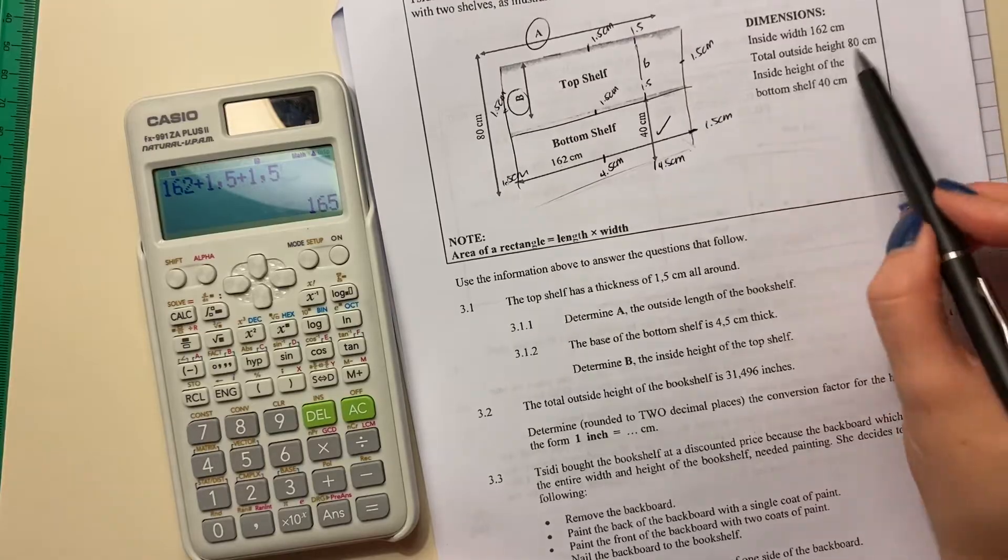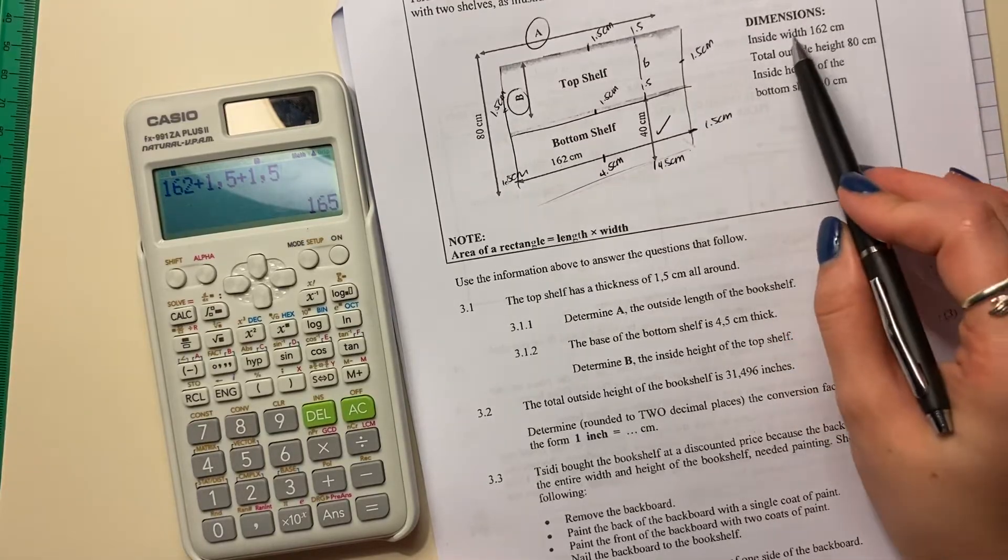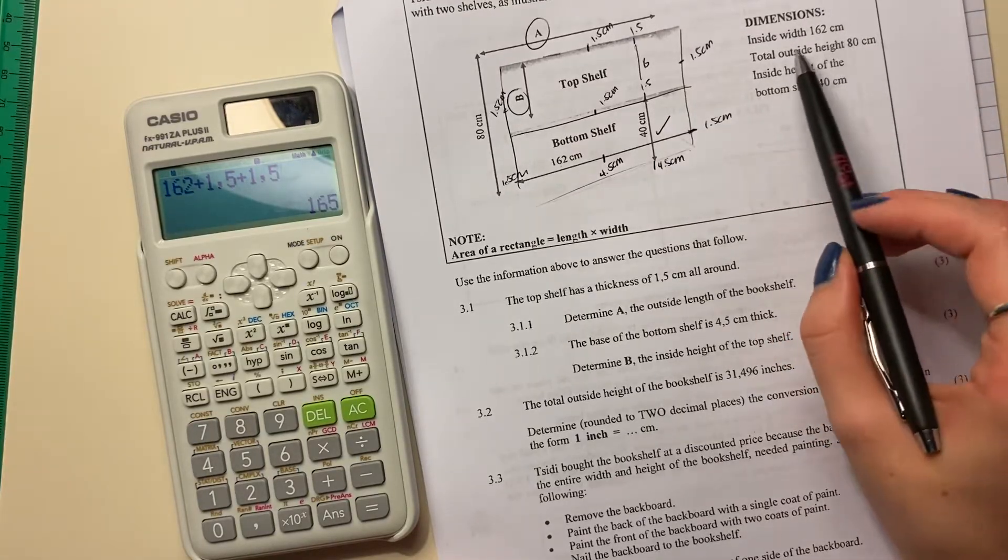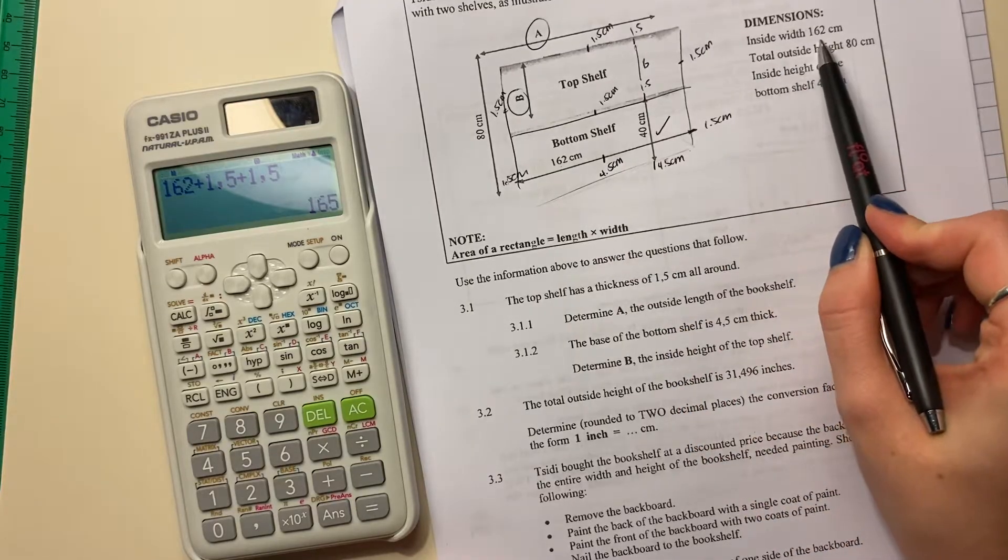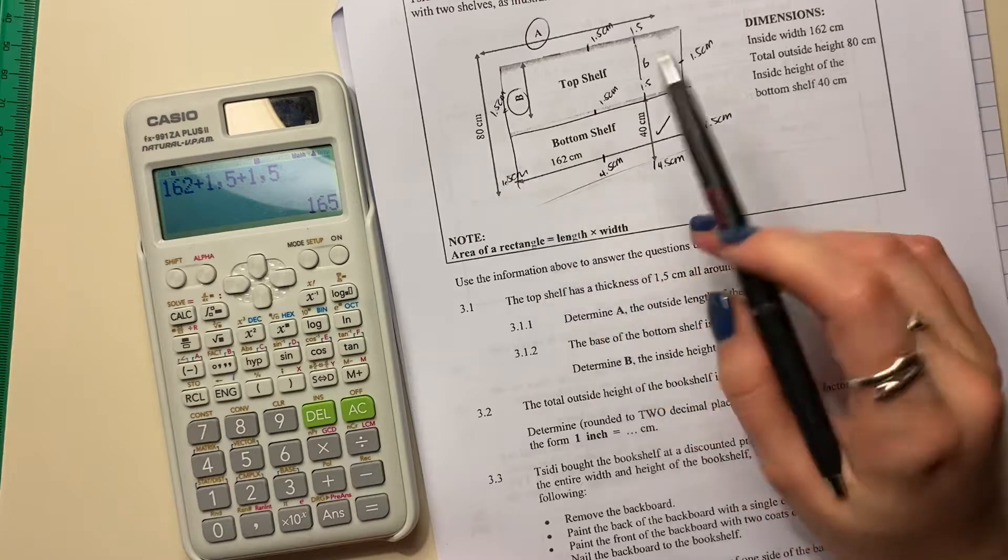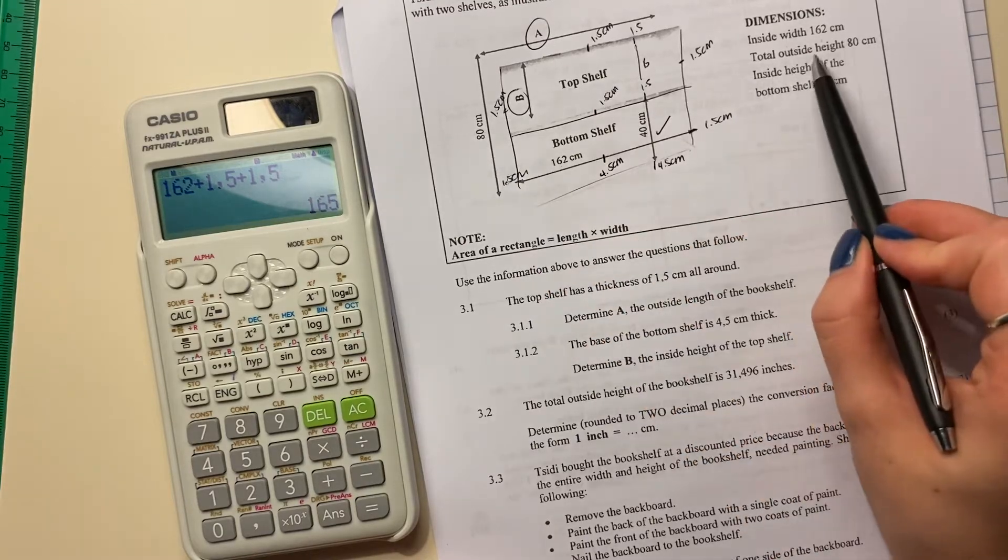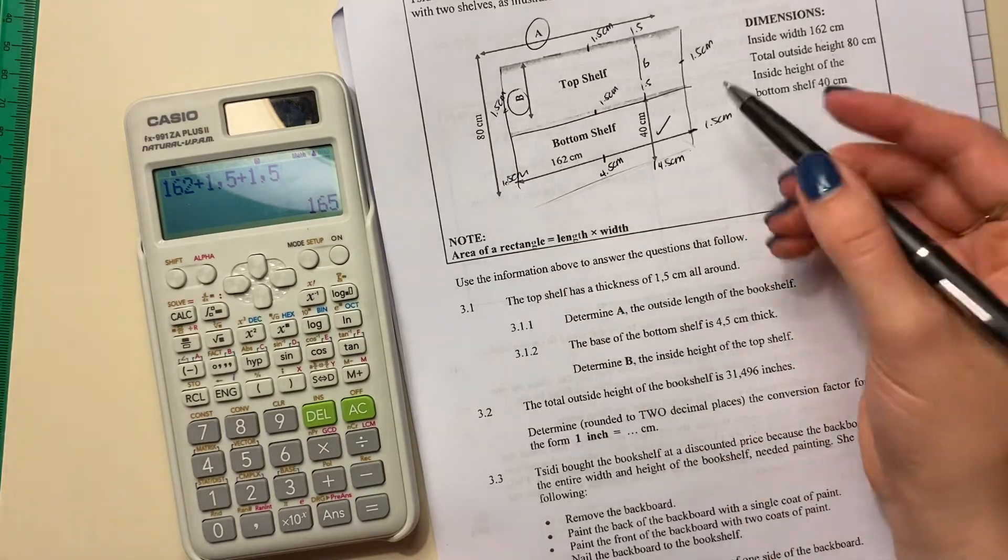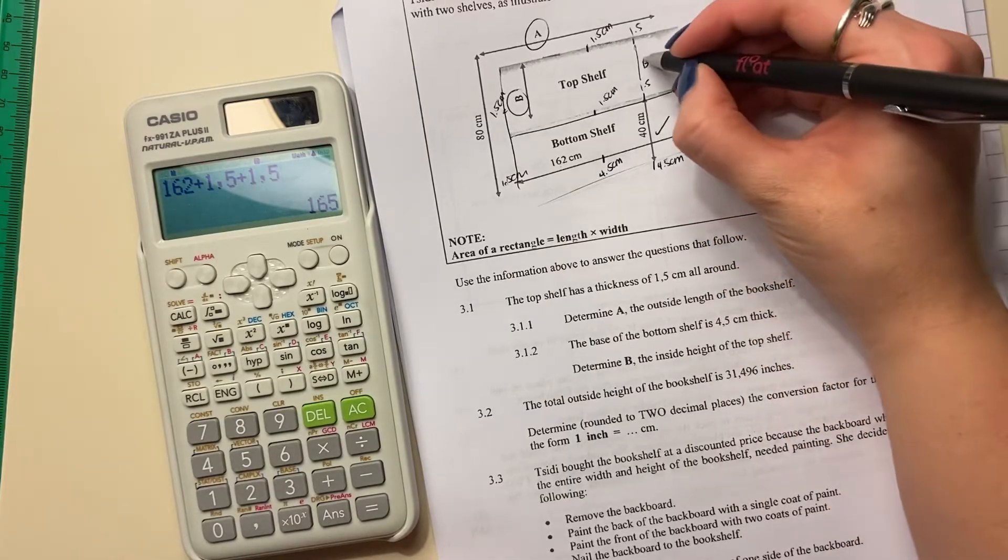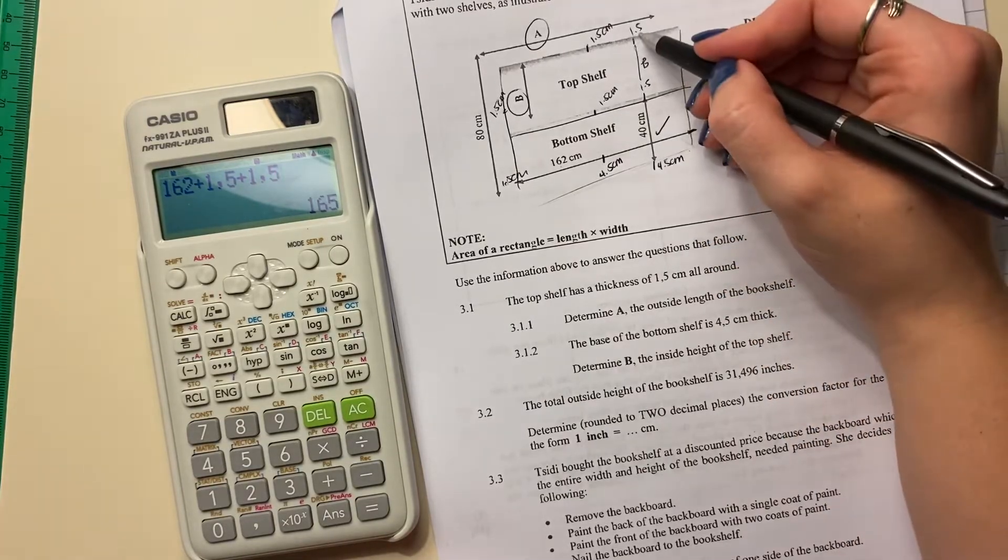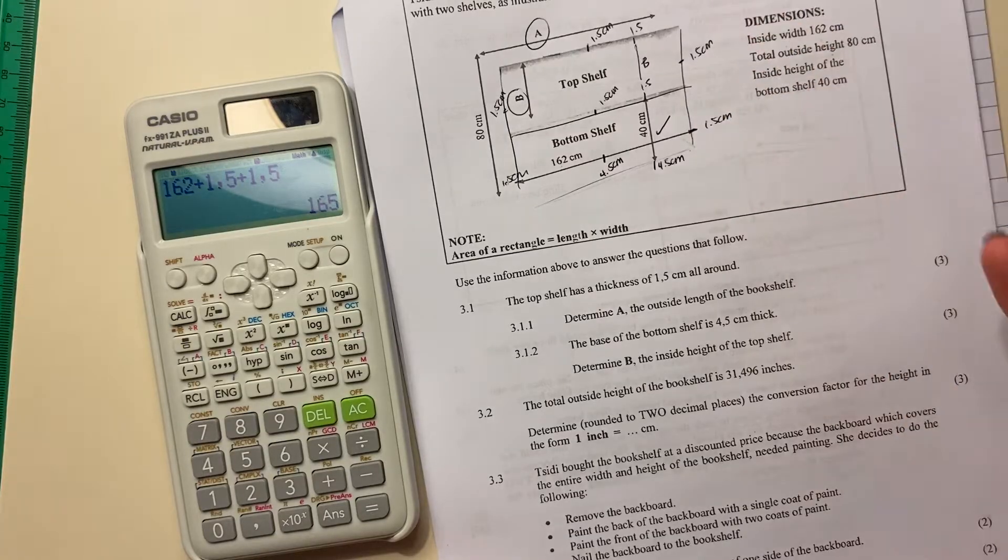Now, it says over here, never ever forget this information here because it helps you. 80 centimeters, it says it's the outside height. So it would take account of the 4.5, the 40, the 1.5, whatever this value b is, and this 1.5. So that's how we're going to work it out.